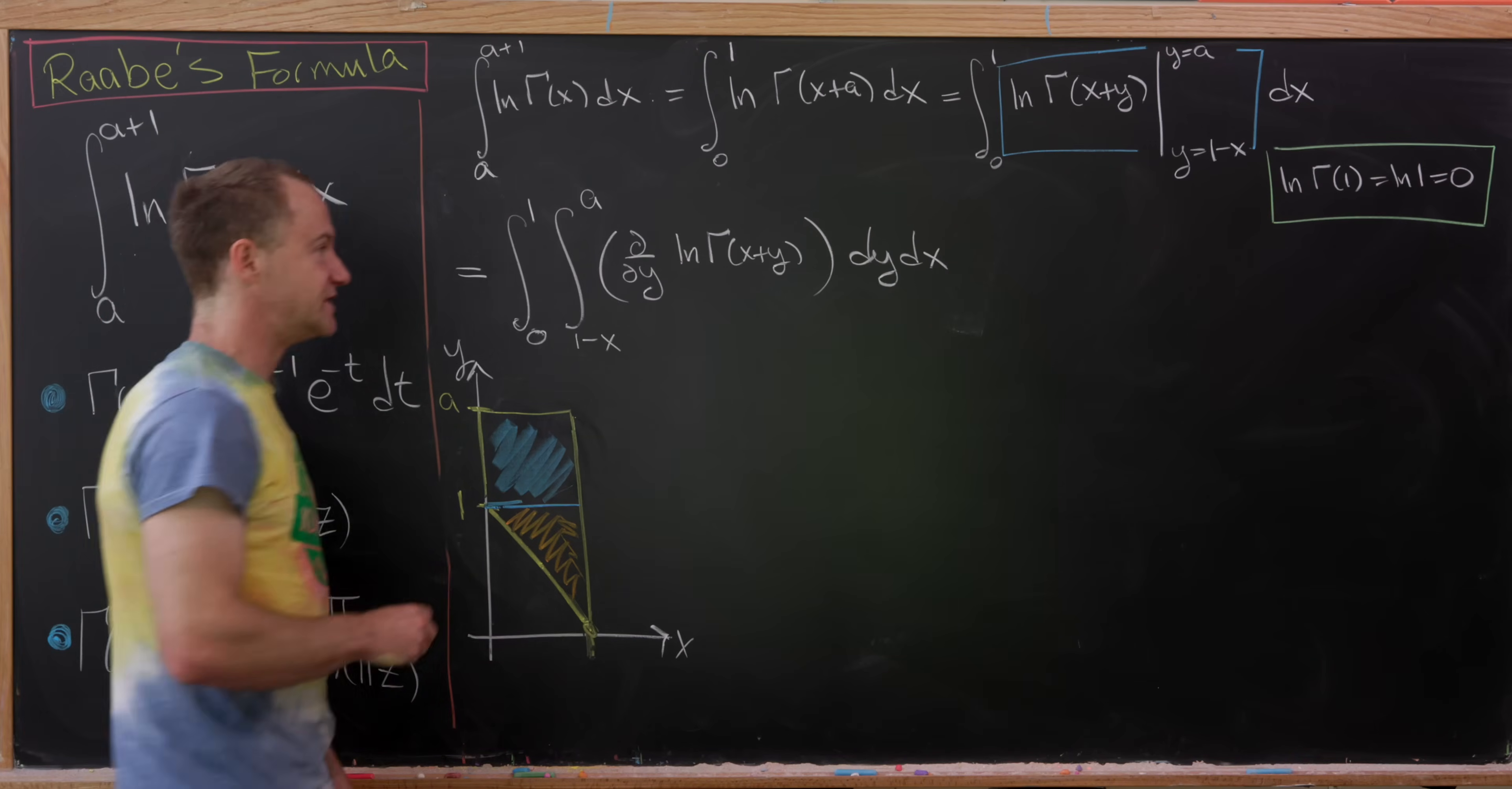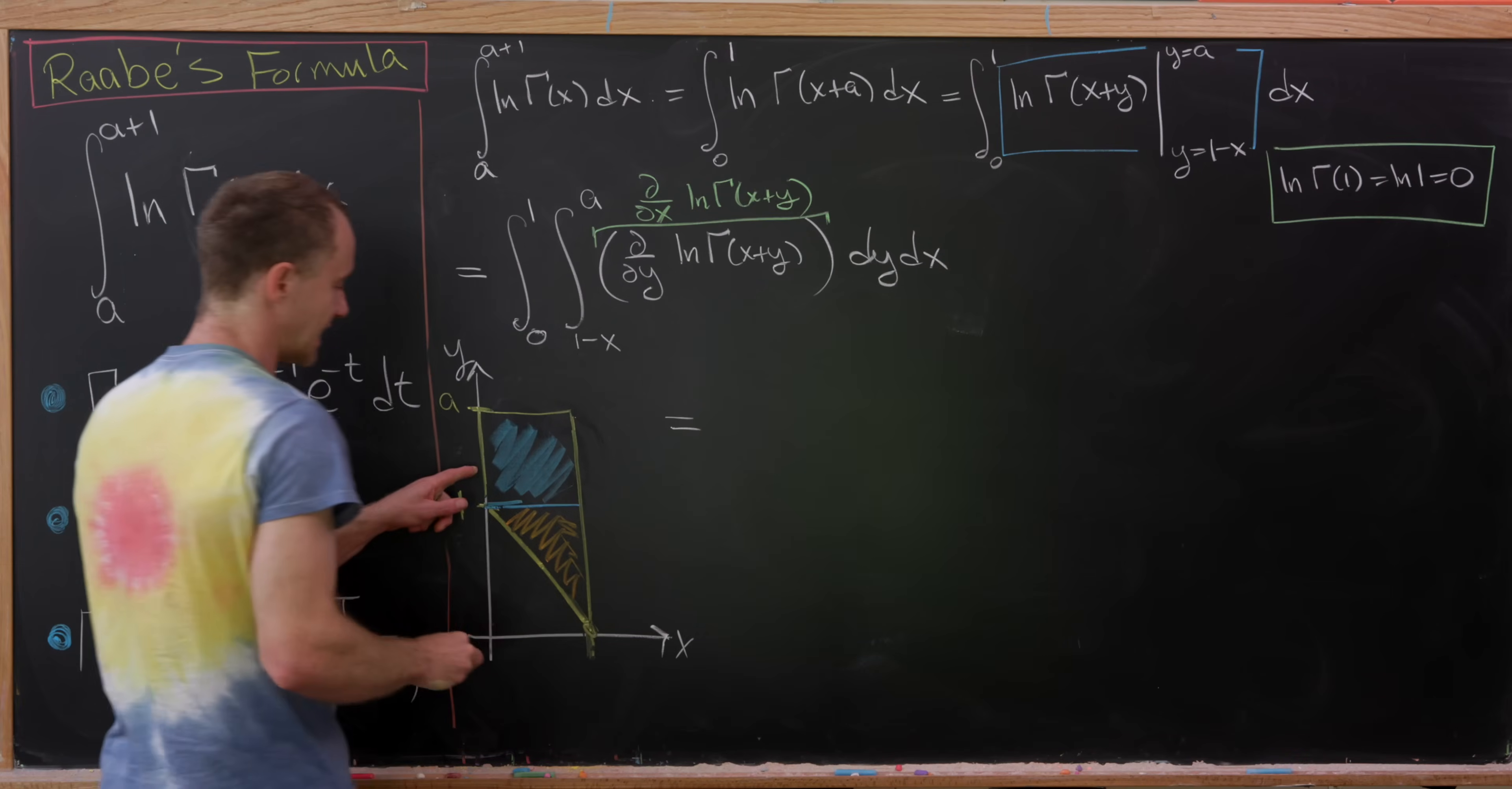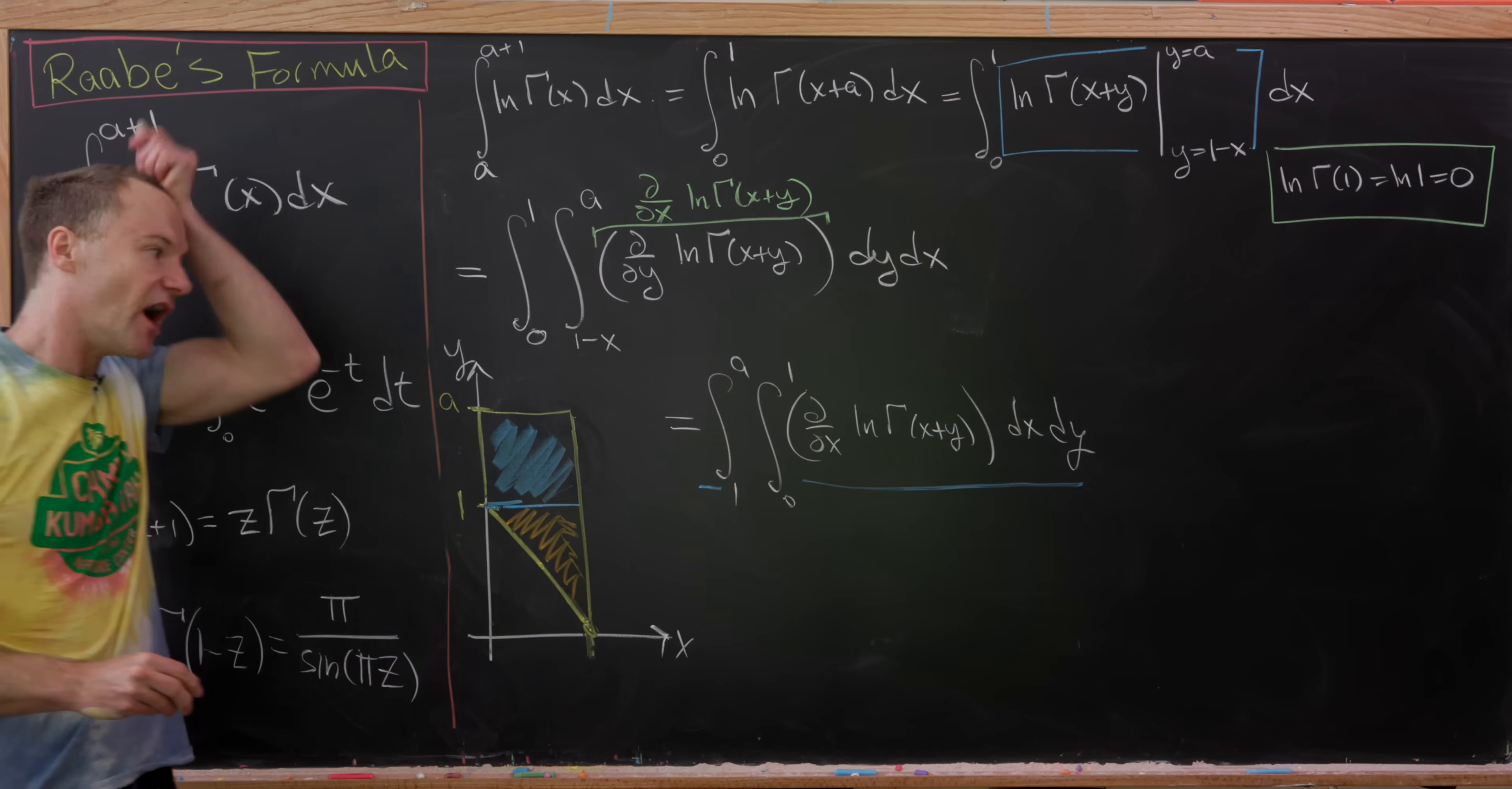But actually, before we do that, I'm going to make a nice observation here. And that is the partial with respect to y of this function is the same thing as the partial with respect to x of this function, just given the nice symmetry built into this function. So I can replace this with the partial with respect to x of the log of gamma of x plus y, and that'll be actually quite useful. Okay, so let's see our blue integral first. So that'll be the integral from 1 to a and then the integral from 0 to 1 of partial with respect to x of log of gamma of x plus y and then dx dy.